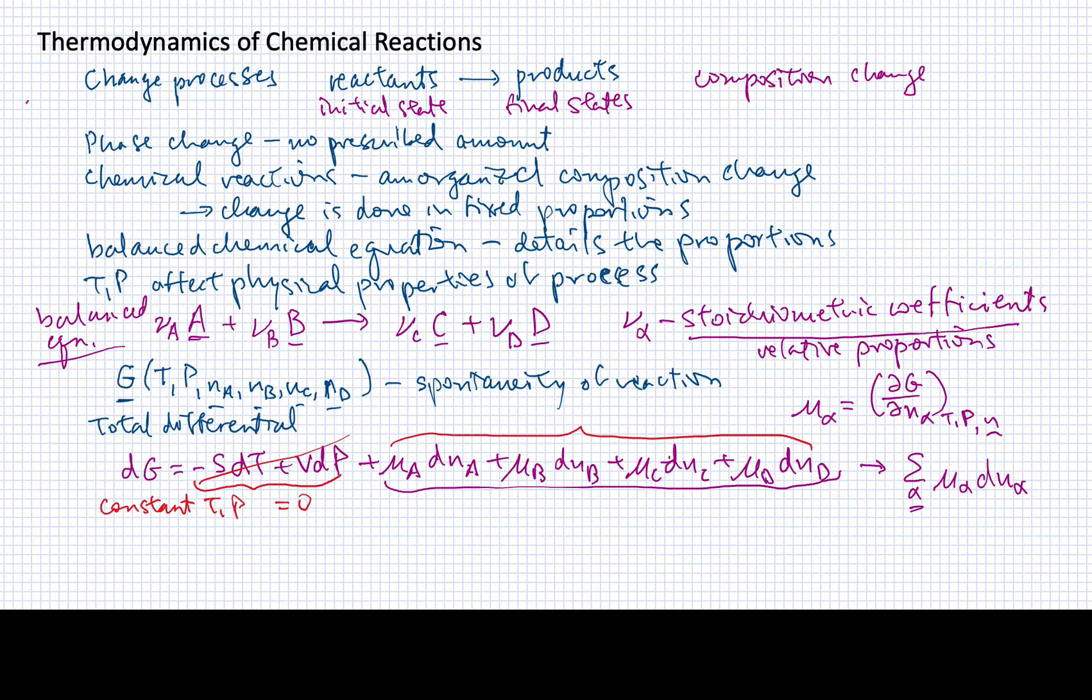Now I want to introduce one other factor that will be important to us. As I'm writing down the number, the change in the number of moles of something, let me track how many moles there would be. So let's say for component α, so that could be A, B, C, or D, I'm going to have some initial number of moles present in the reaction mixture, and then it's going to change by some amount that I'll call dN_α. I want to generalize dN_α. It's got to follow the relative proportions that are given in the balanced chemical equation, so I need to somehow reflect that in the stoichiometric coefficients.